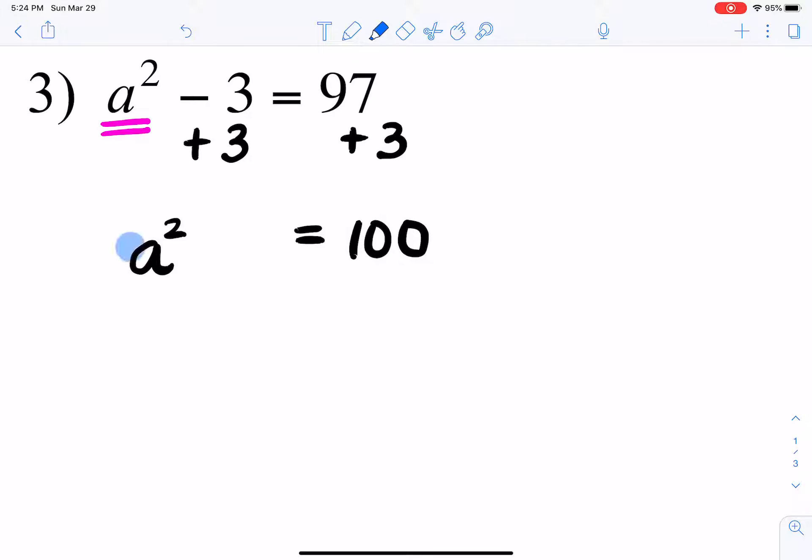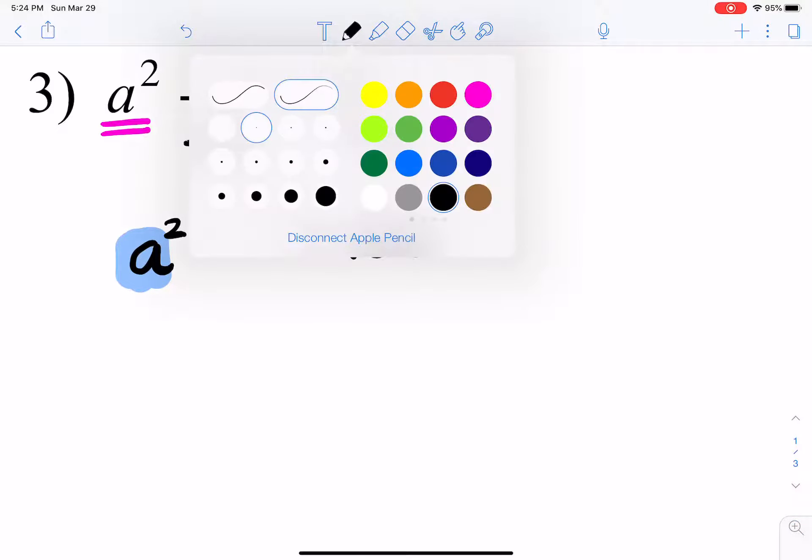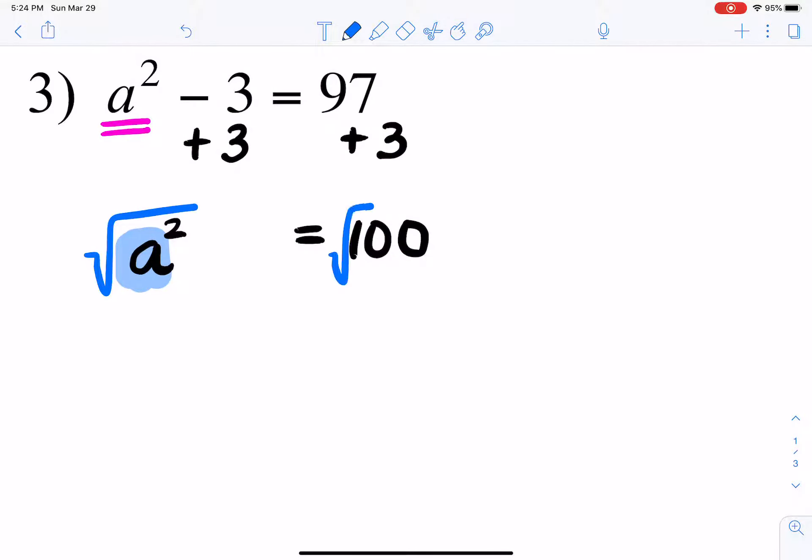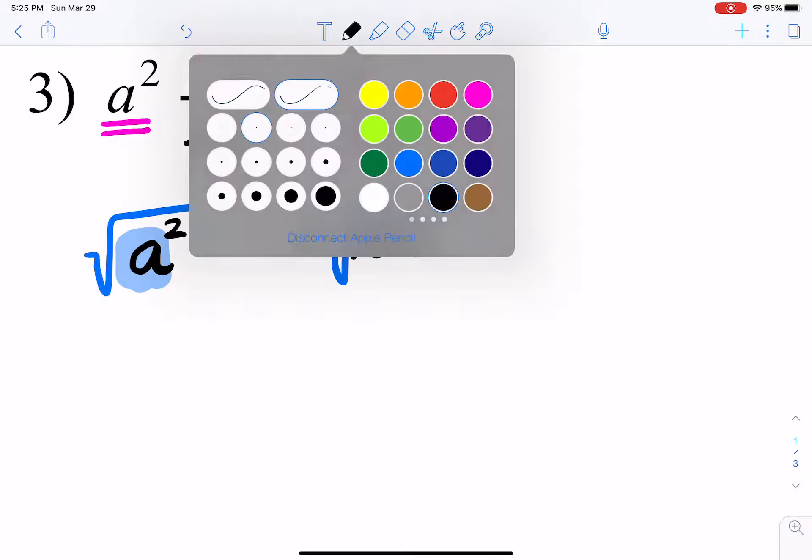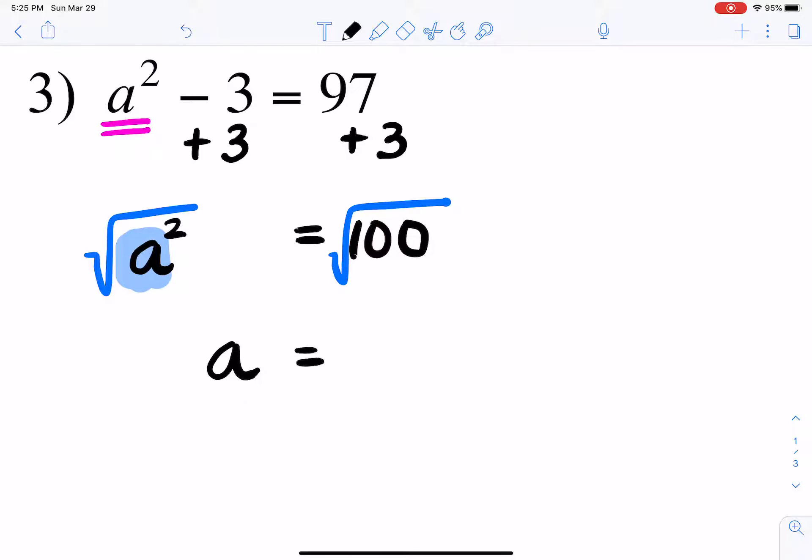Now, to basically isolate the a, what we want to do is we want to take the square root of each side. And the square root of a squared is a, and the square root of 100 is 10.